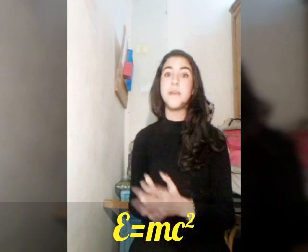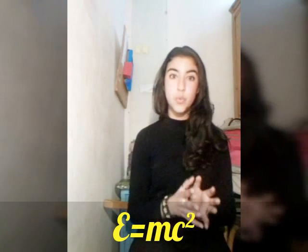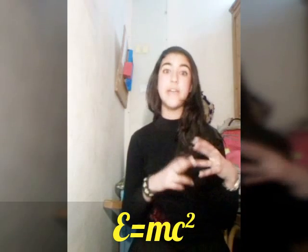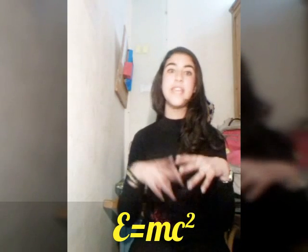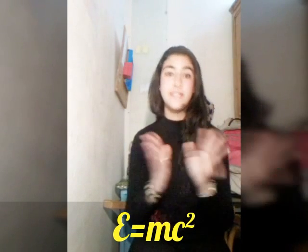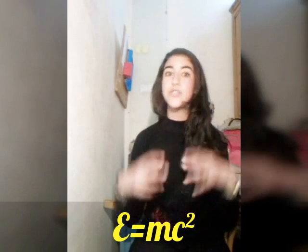Einstein explained this with E equals MC squared. E is the energy, M is the mass, and C is the speed of light. This is how energy is transformed from mass into energy that we are able to use.